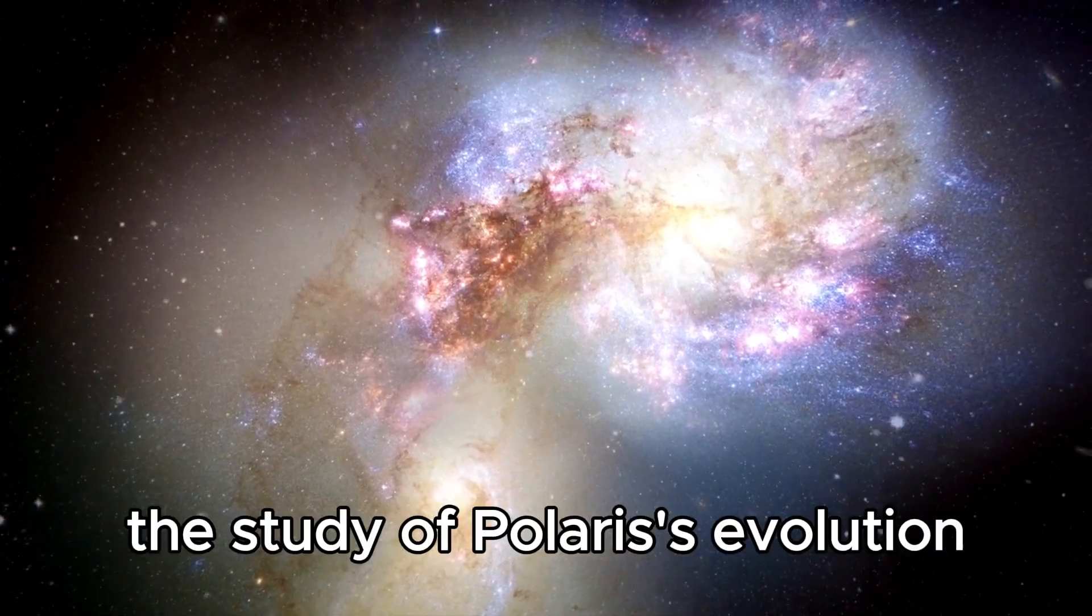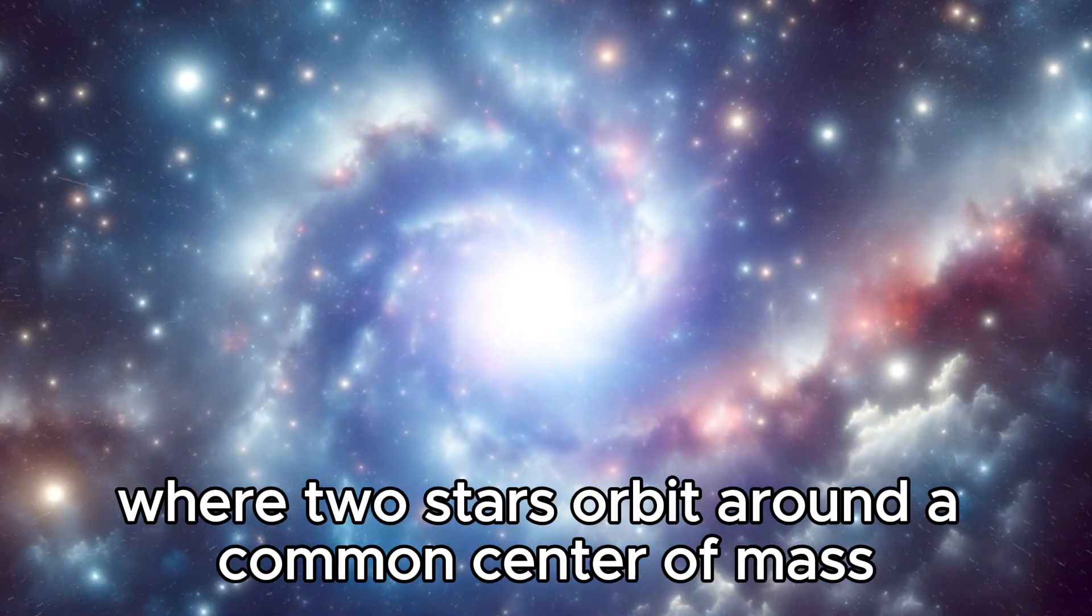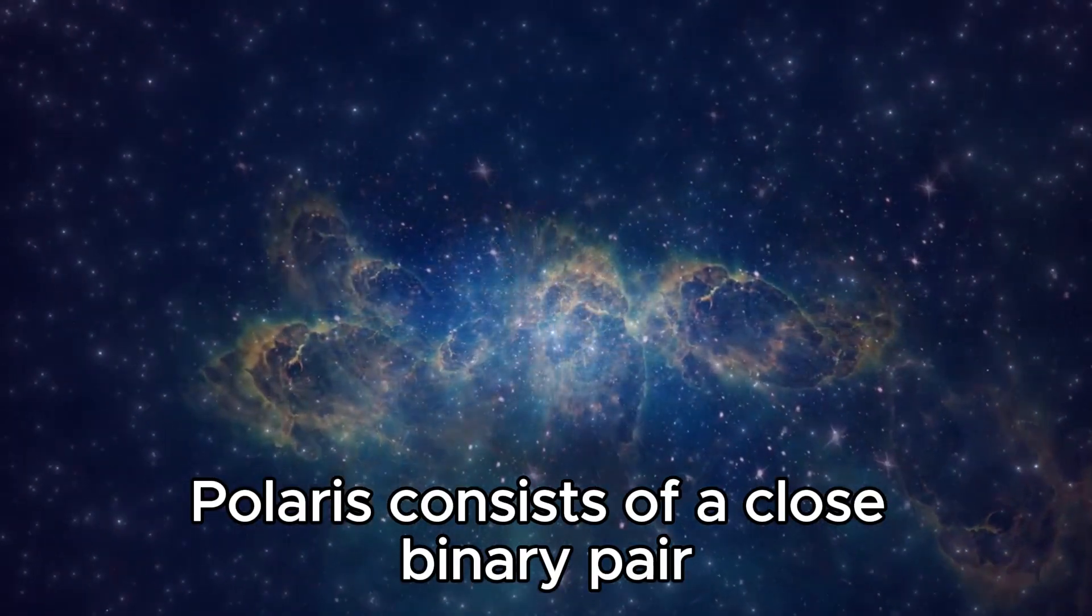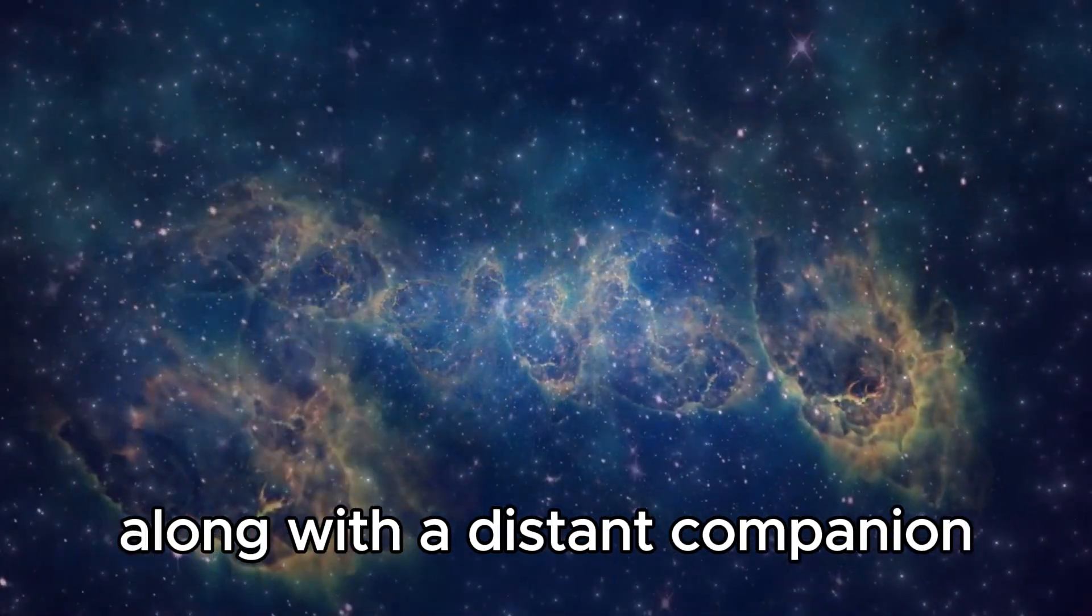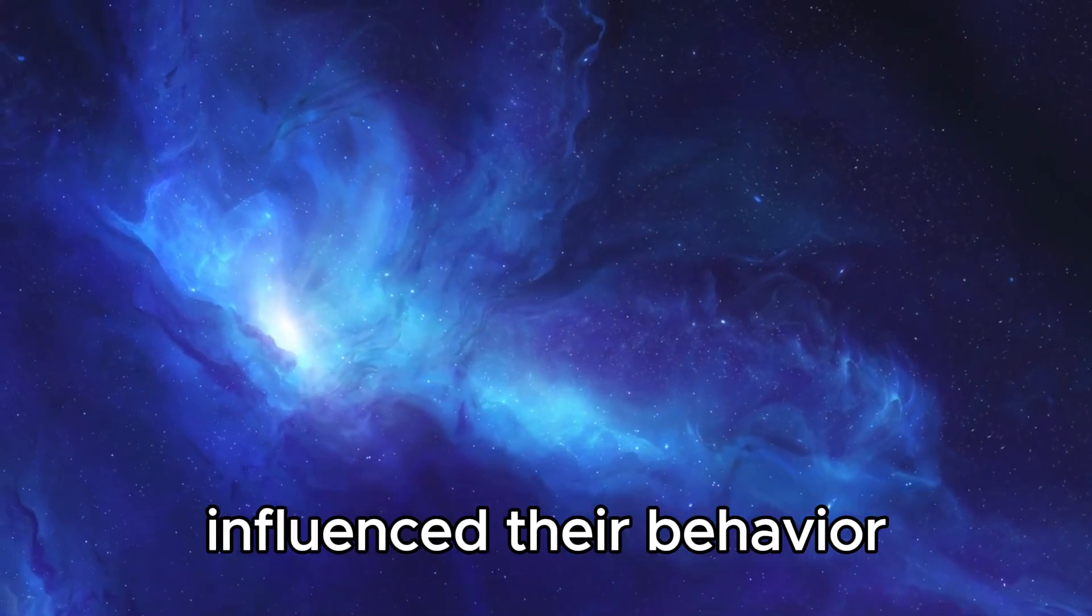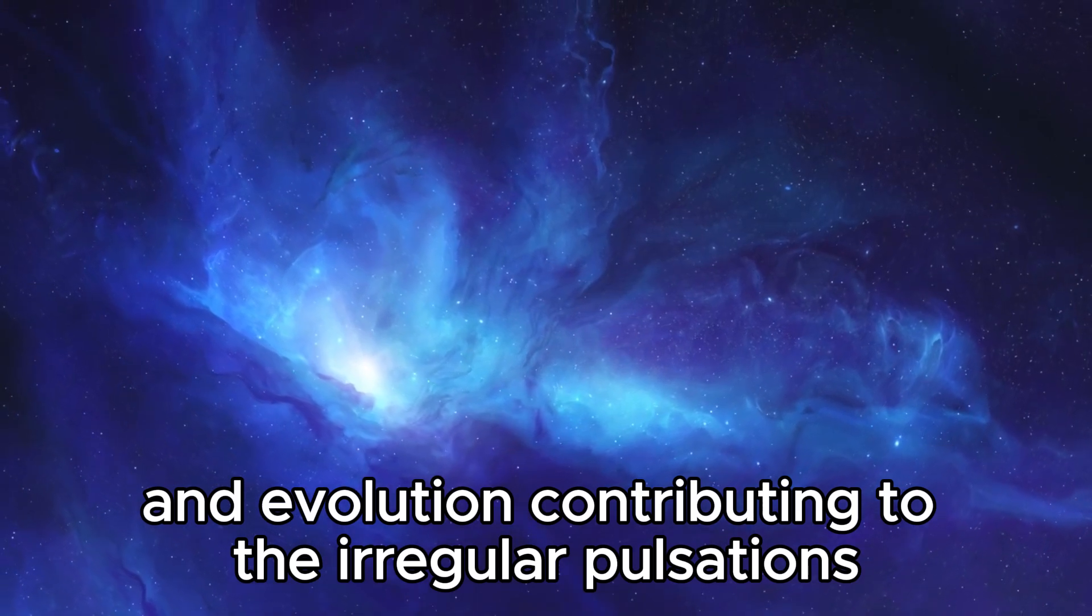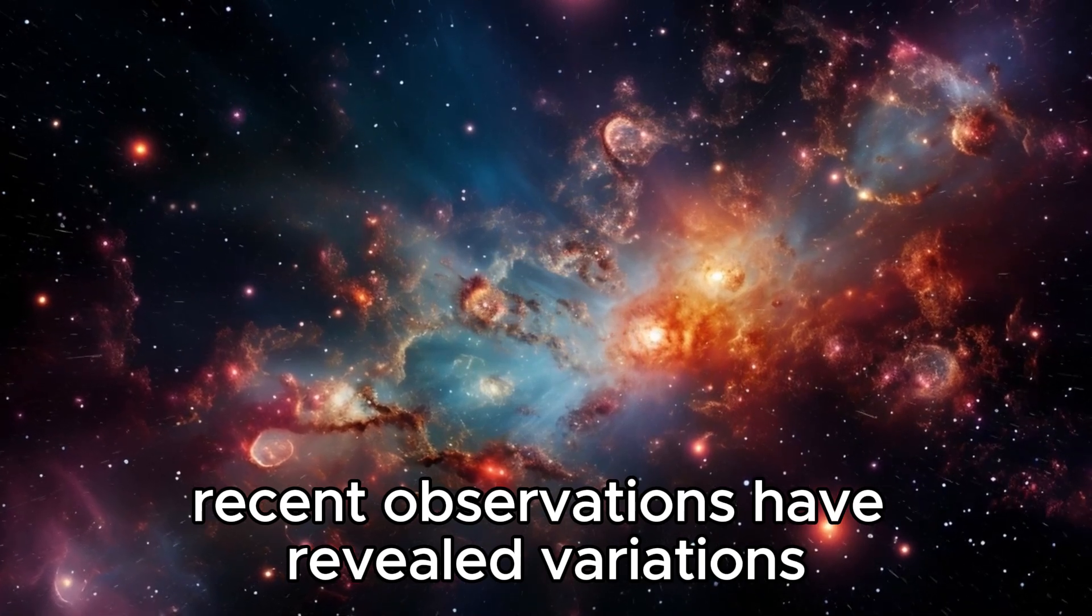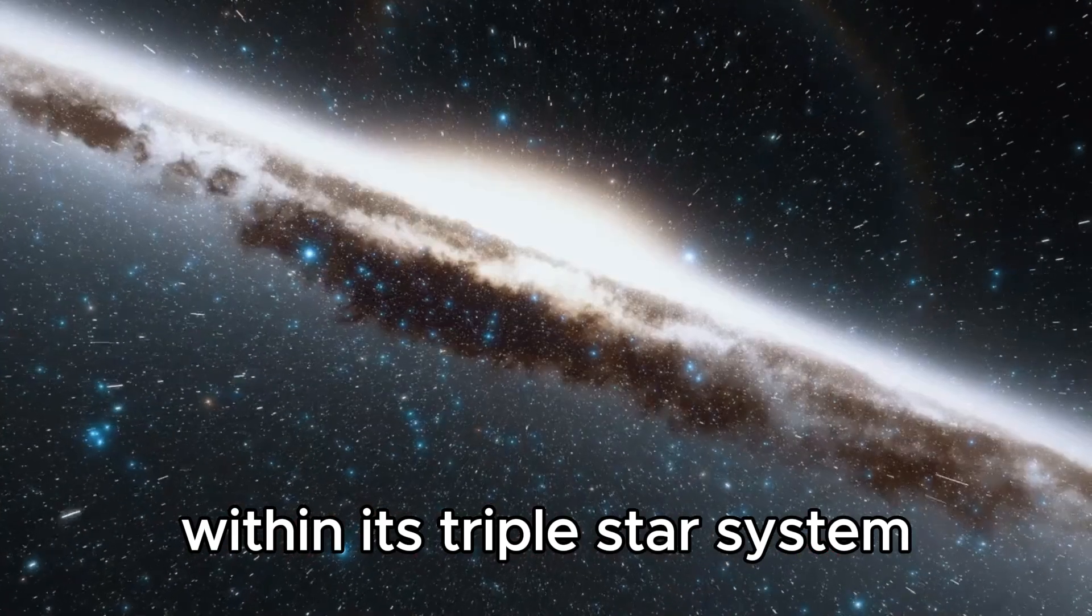The study of Polaris's evolution also extends our understanding of binary star systems, where two stars orbit around a common center of mass. Polaris consists of a close binary pair, Polaris A and Polaris A-flat, along with a distant companion, Polaris B. The gravitational interactions between these stars influence their behavior and evolution, contributing to the irregular pulsations observed in Polaris's brightness.